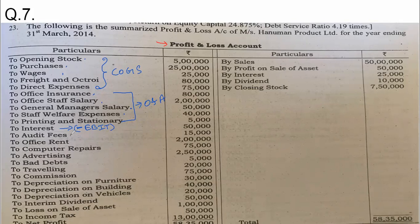Moving ahead: audit fees, office rent, computer repairs — tell me, all these three are part of what? Again, office-related. Audit fees, office rent, computer repairs — all these are office and administrative expenses.